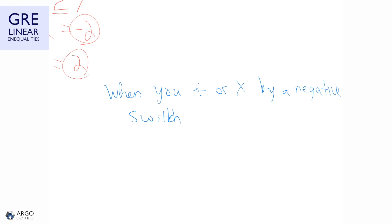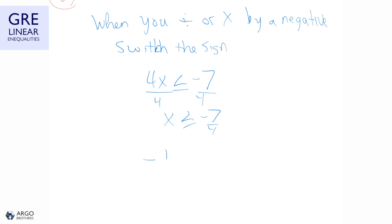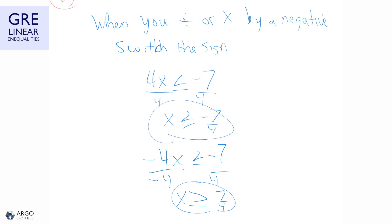For example, 4x is less than or equal to negative 7 — dividing by 4 gives x is less than or equal to negative 7 over 4. But if we have negative 4x is less than or equal to negative 7 and divide by negative 4, we must flip the sign, giving x is greater than or equal to 7 over 4. These are two different solution sets, so always flip the sign when dividing or multiplying by a negative number.